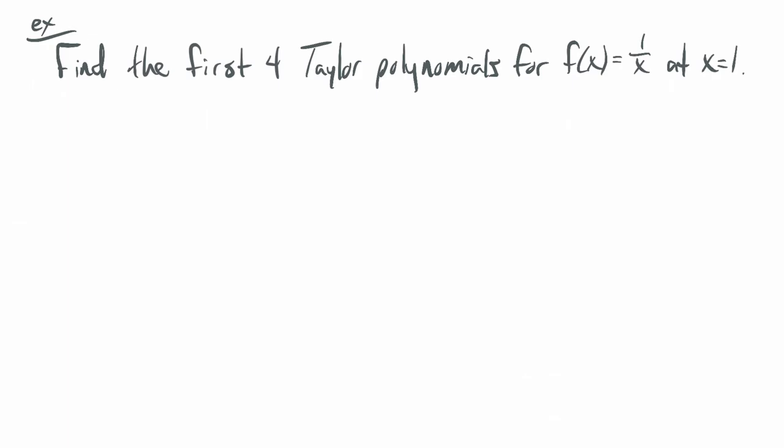Let's look at some examples. We're going to find the first four Taylor polynomials where f of x equals 1 over x at x equals 1. We'll start counting with the zeroth polynomial. So I'm going to need the first four derivatives. I can write f of x as x to the negative 1 power.